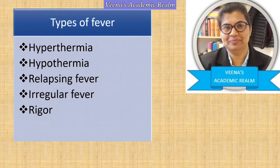Hyperthermia is when the body temperature is more than 105 degrees Fahrenheit or above. Hypothermia is when the body temperature falls below 95 degrees Fahrenheit or 35 degrees Celsius. Such a condition is called hypothermia.